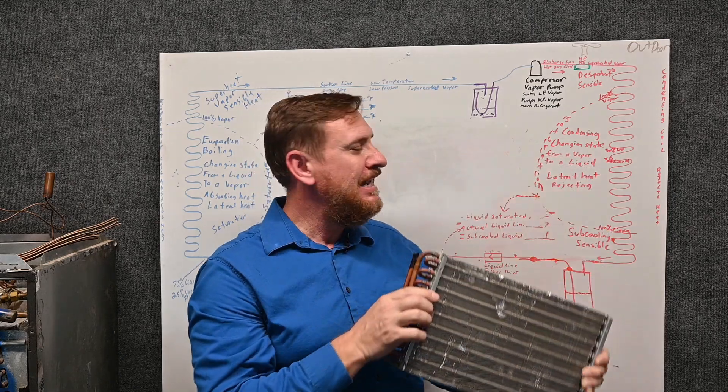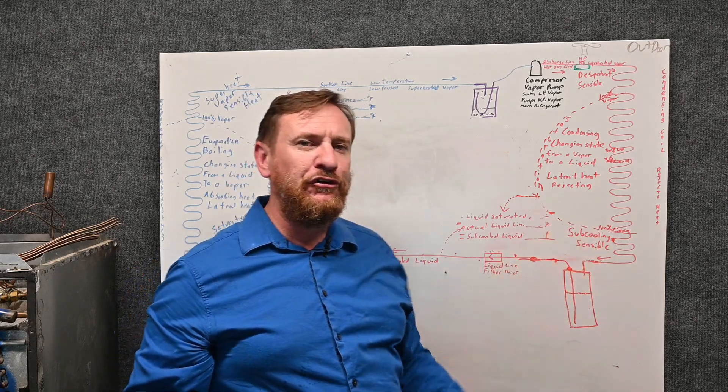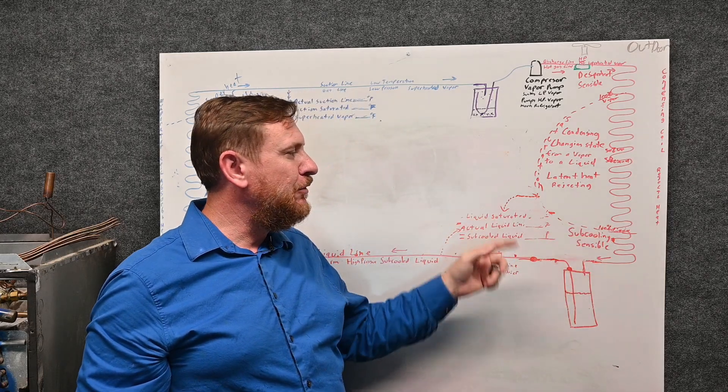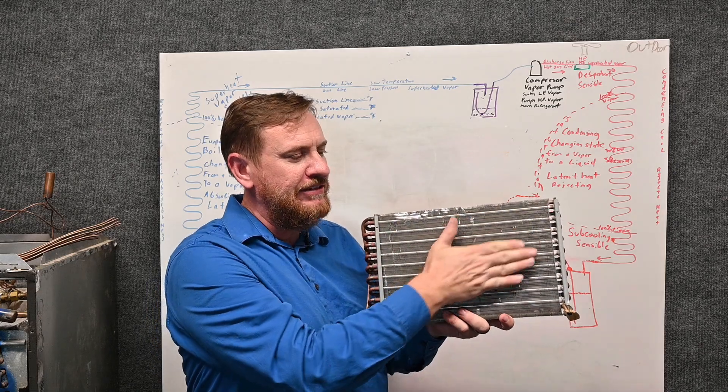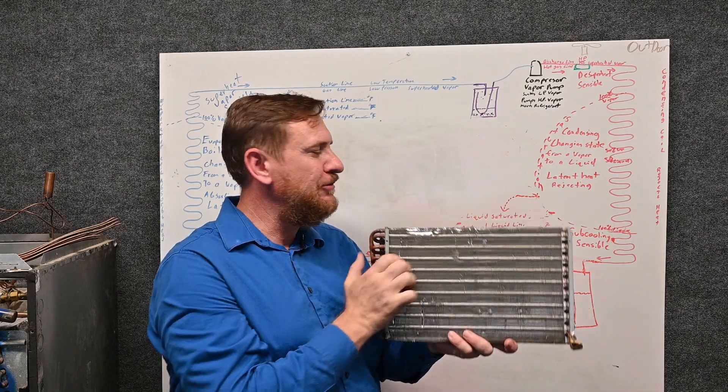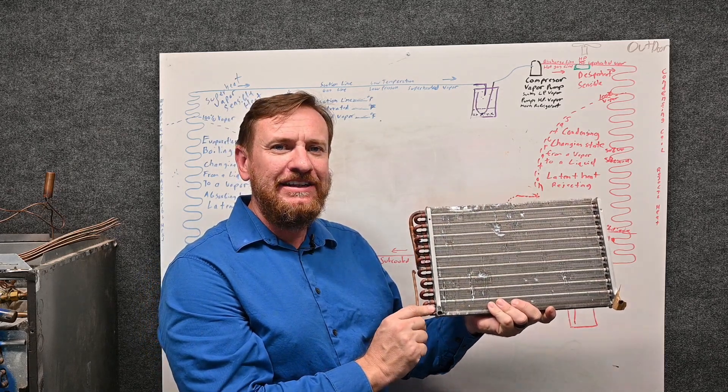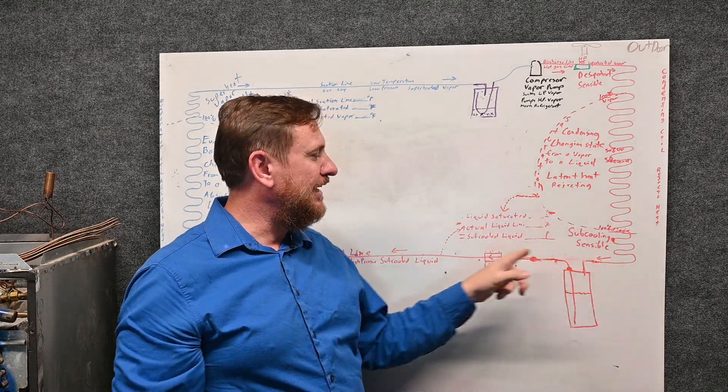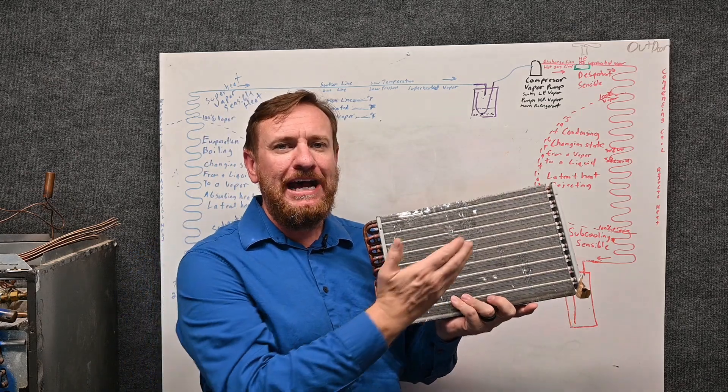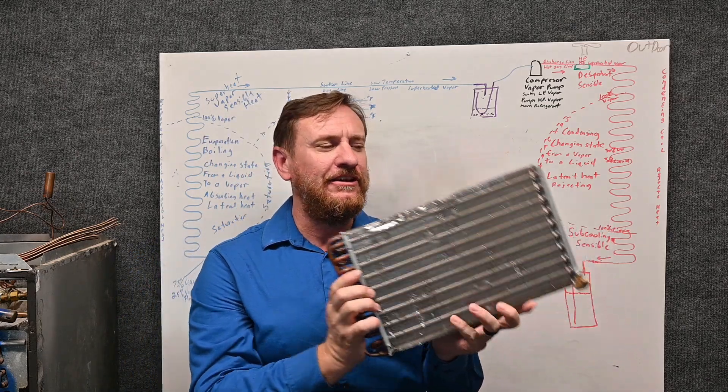That's where our formula for subcooling comes in: the liquid saturated temperature, which is taking place approximately here—PSIG converted to temperature—minus my actual liquid line temperature. So the line leaving the condenser, the actual liquid line, equals our subcool liquid—how much subcooling, how much sensible heat we've taken out of this condenser.